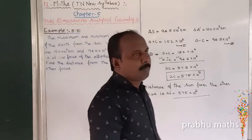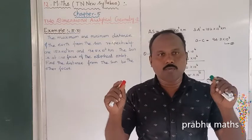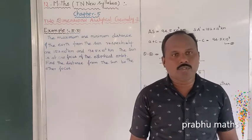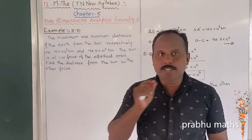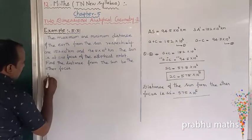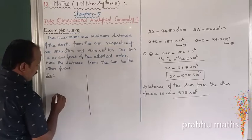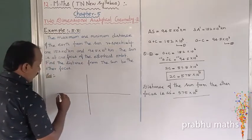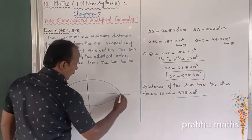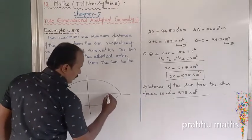We have an elliptical orbit. The Sun is at one focus of this ellipse. Let us consider the elliptical orbit where the Sun is located at one focus.